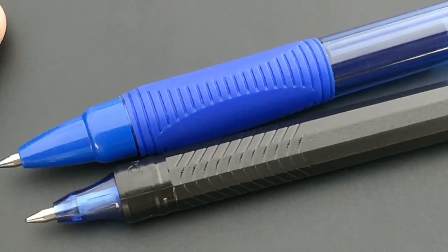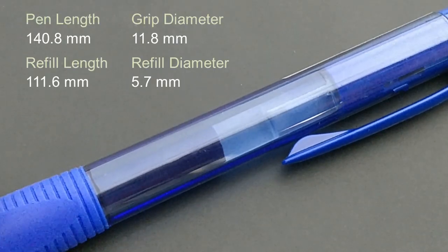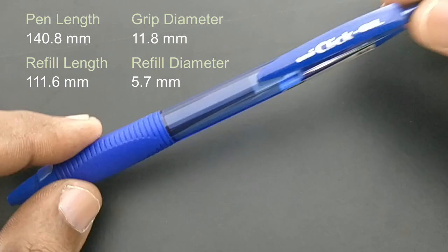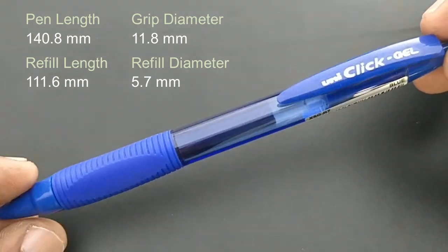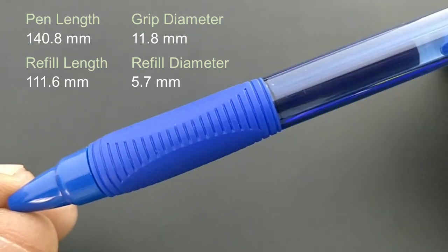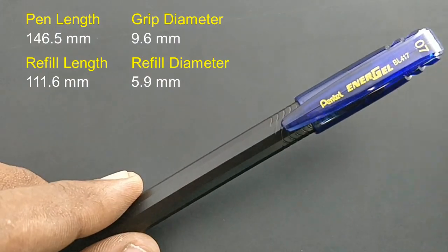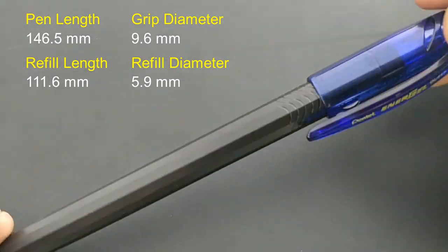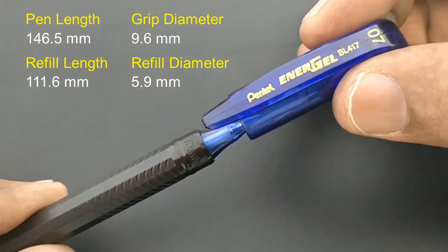Let's do the comparison of Pentel Energel and UniVall Click Gel. Both are gel pens with 0.7 mm tip and this comparison is for the refill and even the writing impression of these two pens.